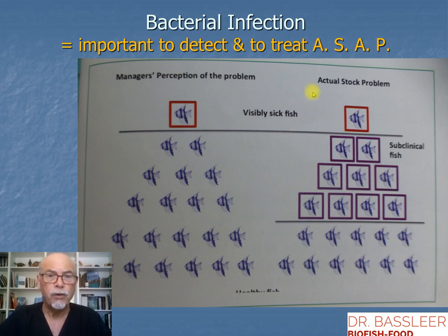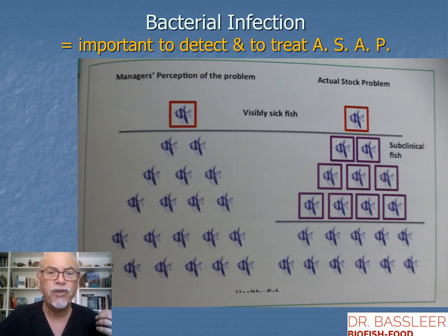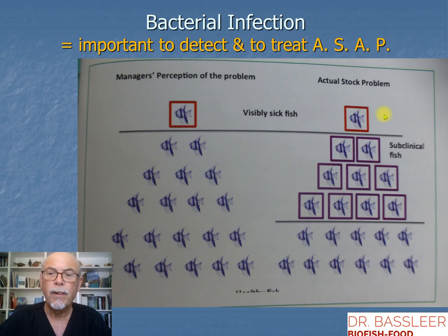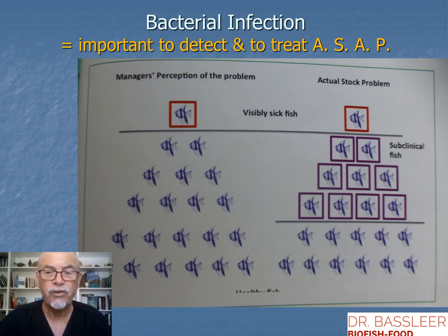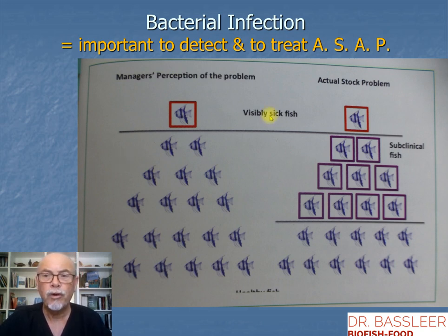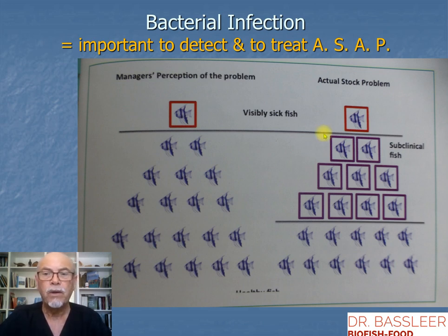It's important to detect disease as soon as possible, because with high temperature bacteria can explode. If you see one sick fish in the tank and the rest looks okay, if you look very closely, that one sick fish is a sign that at least 10 other fish are subclinical, and they might show disease symptoms in the coming days. So if you see one fish showing symptoms, you have to act and treat as soon as possible, because in the next days maybe 10 fish are sick and so badly damaged they're beyond any cure.